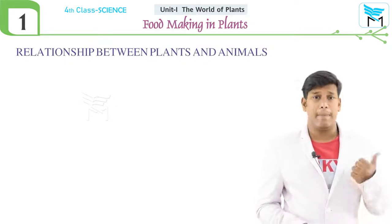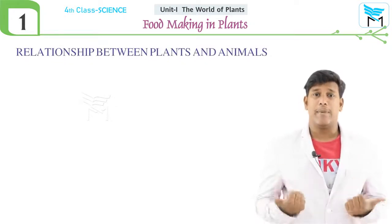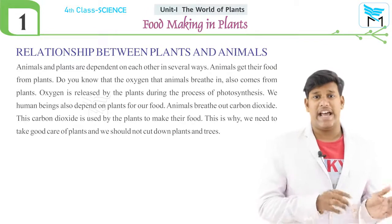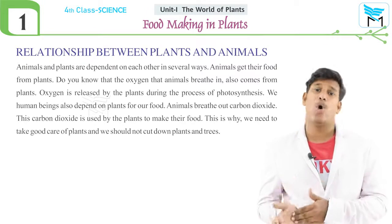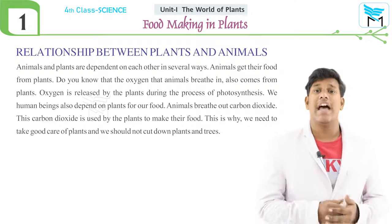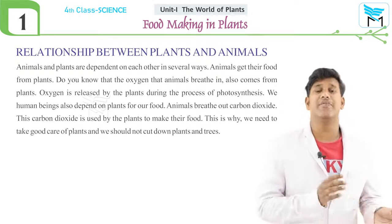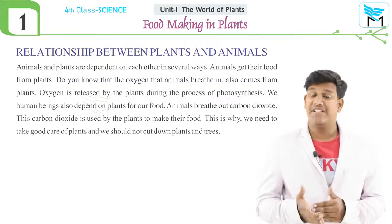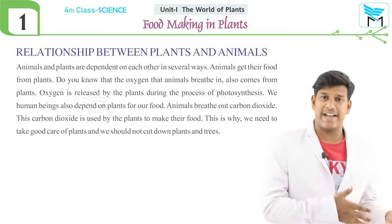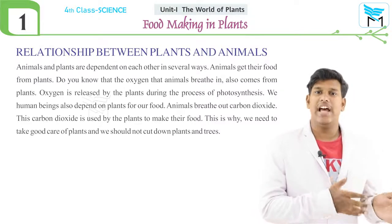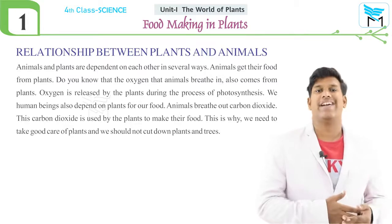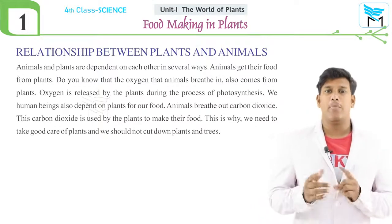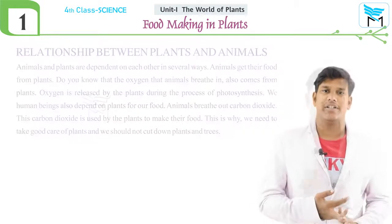Do you know the relationship between plants and animals? They are both interlinked. Plants depend on animals and animals depend on plants. Animals depend on plants for food and oxygen. Plants depend on animals for carbon dioxide, because with the help of carbon dioxide plants can prepare their own food. For this reason, they are interlinked with each other.